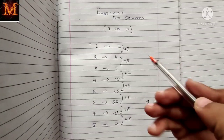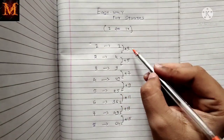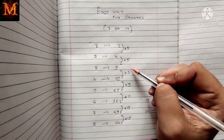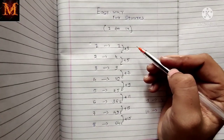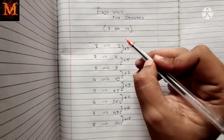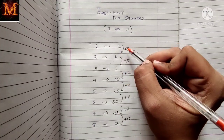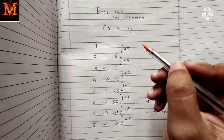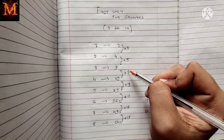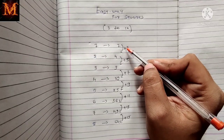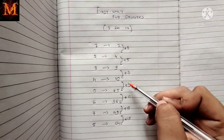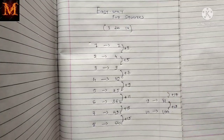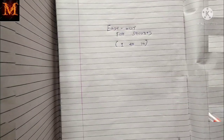Now you can see the pattern — you just have to keep adding 2 each time. You only need to remember two things: that square of 1 is 1, and that you first add plus 3, then keep adding plus 2 each time. This way you can get the squares from 1 to 10 very easily.